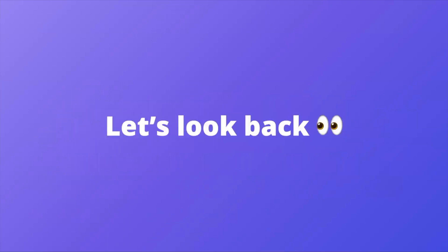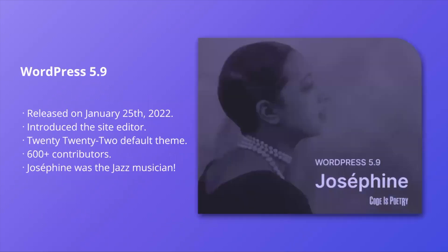So to start, let's look back. WordPress 5.9 was released on January 25th, 2022. It introduced the site editor as well as the 2022 default theme, had over 600 contributors, and Josephine was the jazz musician.